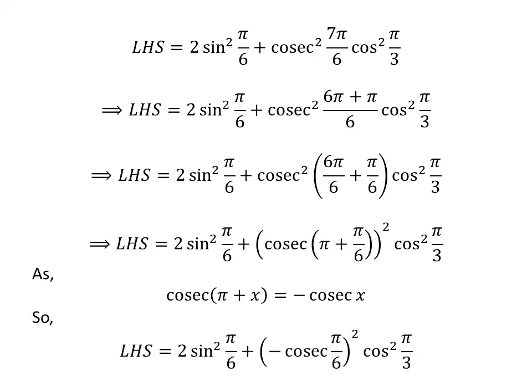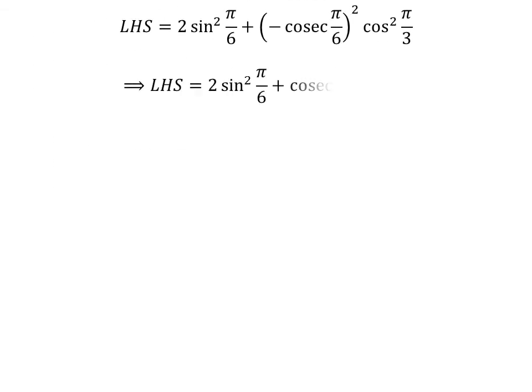Application of the above identity gives us the left-hand side equal to 2 times square of sine of pi upon 6 plus square of minus cosecant of pi upon 6 times square of cosine of pi upon 3. As the square of minus is plus, the left-hand side becomes 2 times square of sine of pi upon 6 plus square of cosecant of pi upon 6 times square of cosine of pi upon 3.